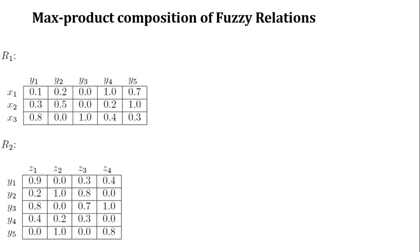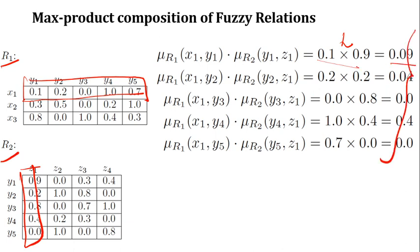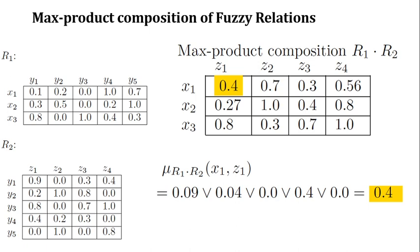Using the same technique, we can also get the max-product composition. We take relations R1 and R2 and apply the same approach — first row and first column — but in this case we apply the product operator instead of min. The product is just like arithmetic multiplication: you multiply the two values and get the result. Once you get all those values, you take the maximum among them. Here we have five values and the maximum is 0.4, which indicates the relation between X1 and Z1.